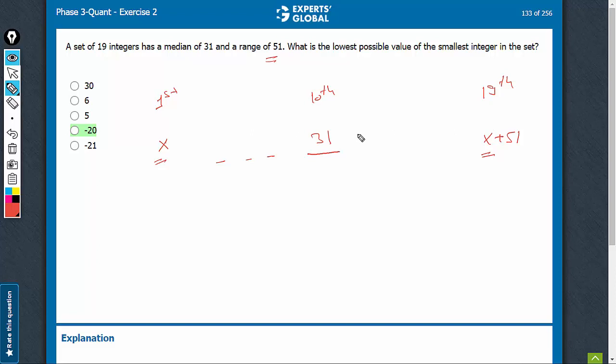Please don't commit that mistake of taking 32, 33, 34, because it is not given that the integers are all different.